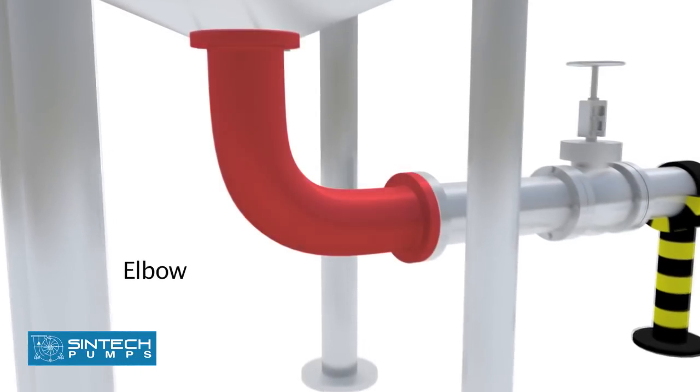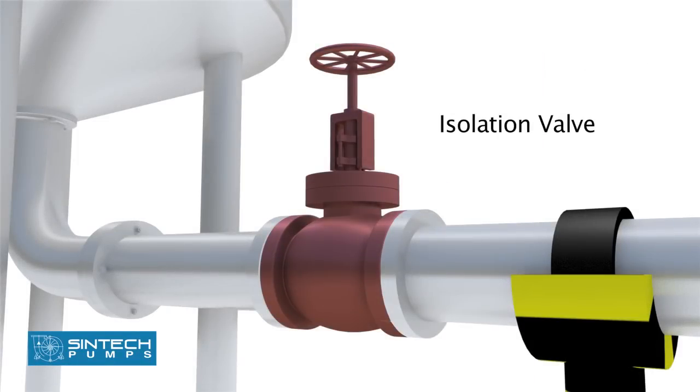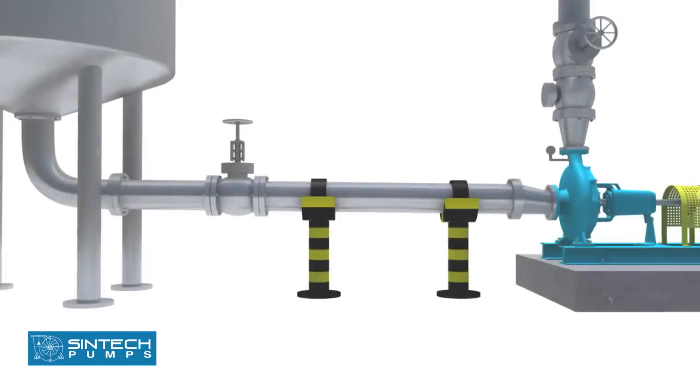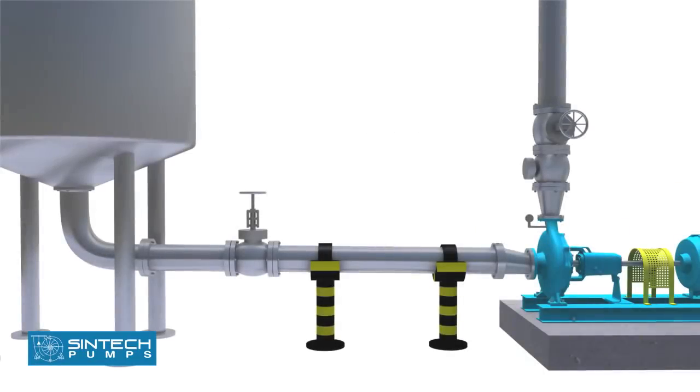The elbow should be of standard type or of the long radius type. Isolation valve should be provided in suction line. The pipe supplying from the tank into the pump should have a descending inclination. The straight run of the piping leading to the pump suction nozzle should be at least 3 times to 6 times the diameter of the pipe from the upstream elbow.